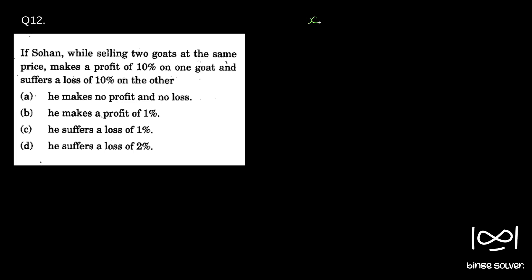For example, say x was the price of one goat. He is selling it for 1.1x, making 10% profit here. And y was the price of the second goat. He is selling it for 0.9y, making a loss of 10% here. So it is given that 1.1x and 0.9y are the same. He is selling two goats at the same price, right?